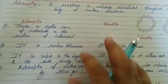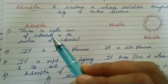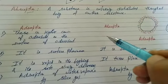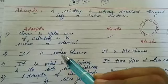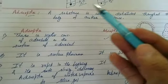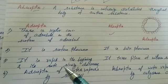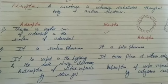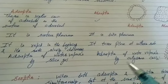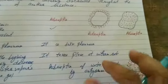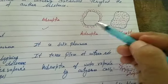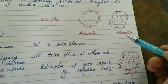Distinguish adsorption and absorption. Adsorption: the substance accumulates at the surface — it is a surface phenomenon because it arises due to unbalanced forces at the surface. It is rapid in the beginning and its rate slowly decreases. Example: adsorption of water vapors by silica gel. Absorption: the substance is uniformly distributed throughout the body of another substance — it is a bulk phenomenon. It takes place at a uniform rate. Example: absorption of water vapors by anhydrous calcium chloride.